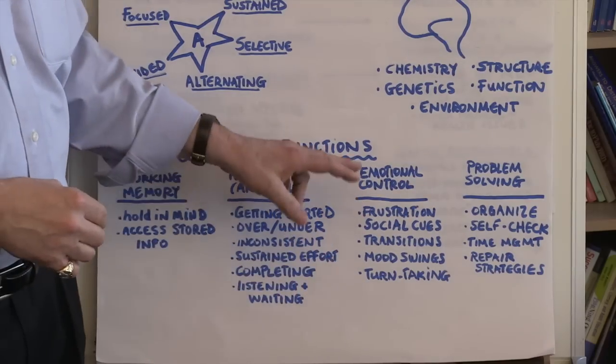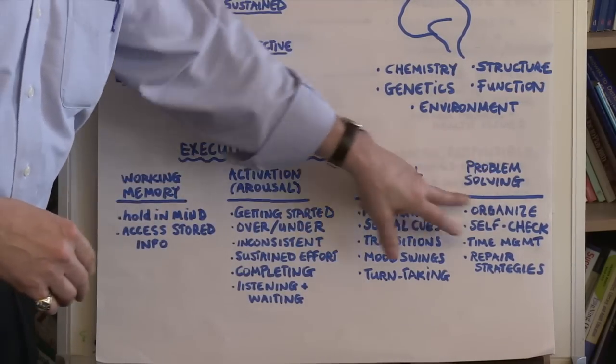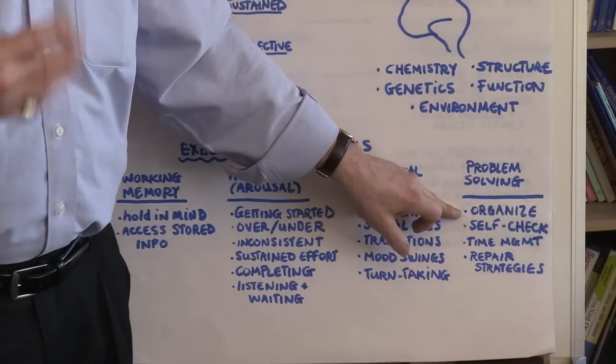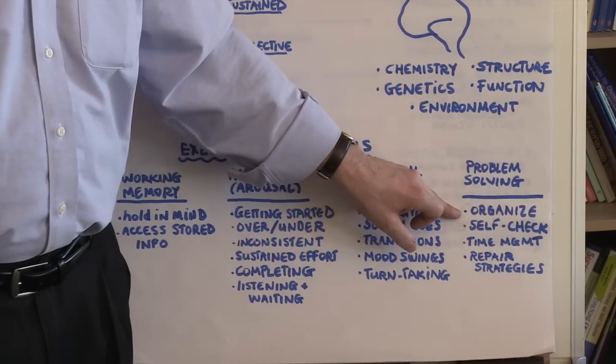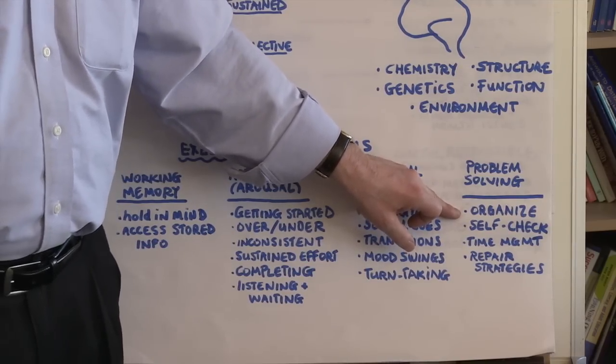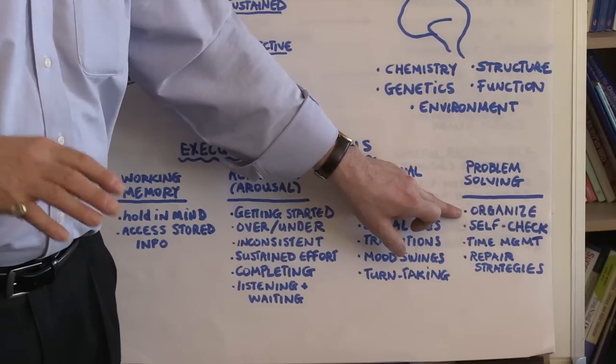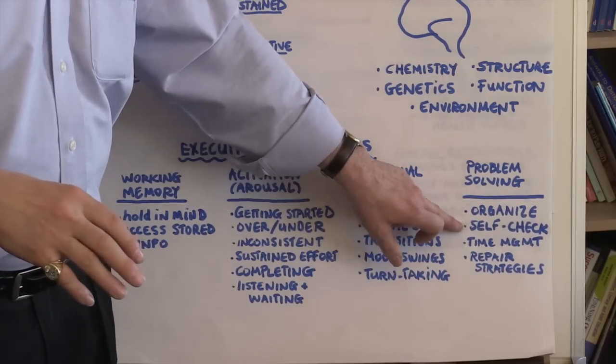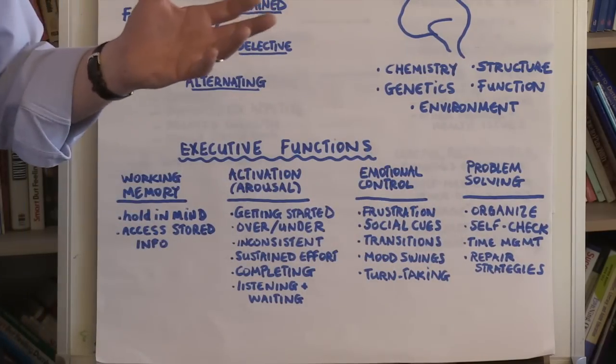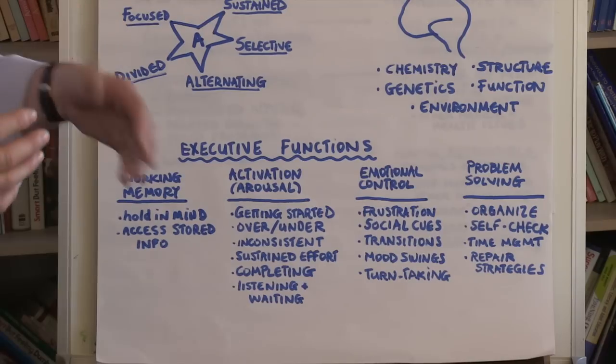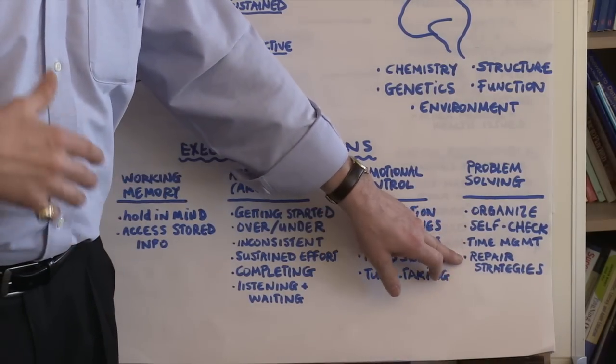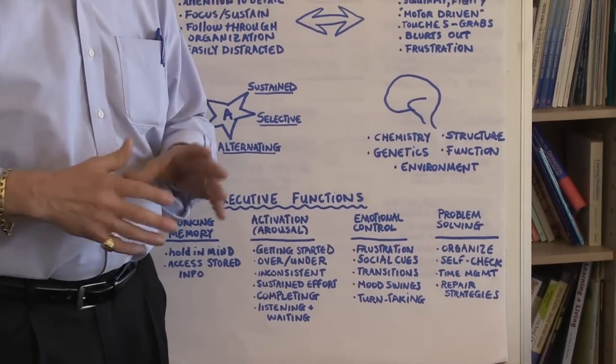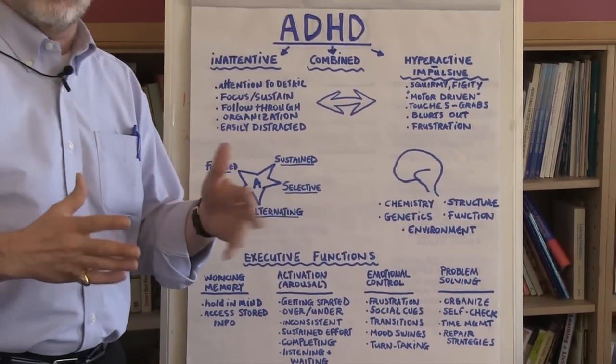In terms of problem solving, individuals with ADHD have difficulty organizing themselves to solve problems. They're often overwhelmed by all of the detail that they need to consider, or they pick the wrong detail so it's difficult for them to organize around a task. They have difficulty self-checking or self-evaluating where they are. They don't often manage time well. And while they're problem solving, they often have difficulty with repair strategies, knowing what to do when things seem not to be going right.